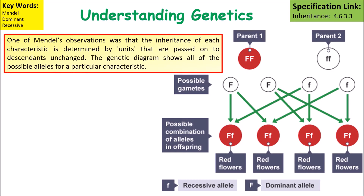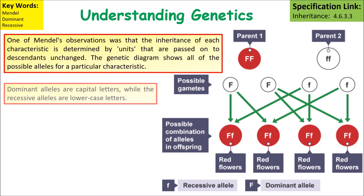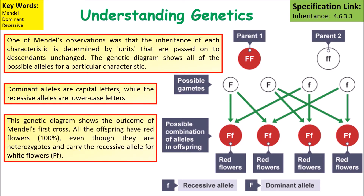One of Mendel's observations was that the inheritance of each characteristic is determined by units that are passed on to descendants. The genetic diagram shows all possible alleles. Dominant alleles are shown with capital letters while recessive alleles are shown with lowercase letters. This genetic diagram shows the outcome of Mendel's first cross — all the offspring have red flowers even though they are heterozygous, meaning they carry an allele for both the dominant and the recessive genes.